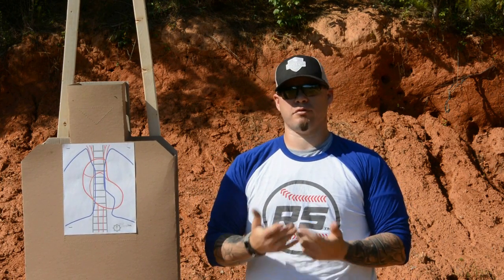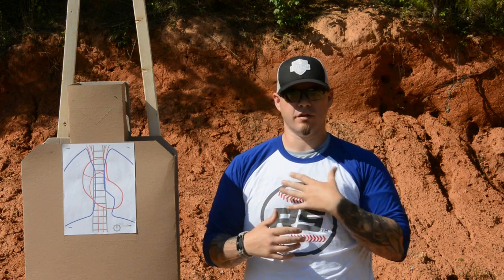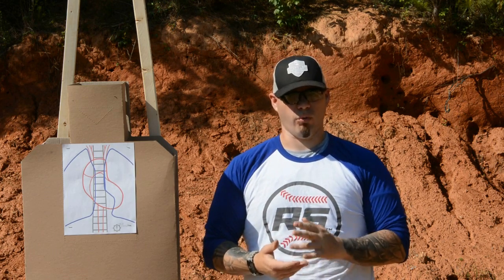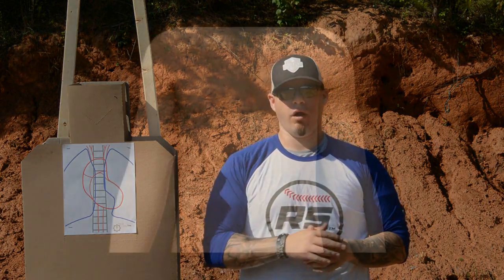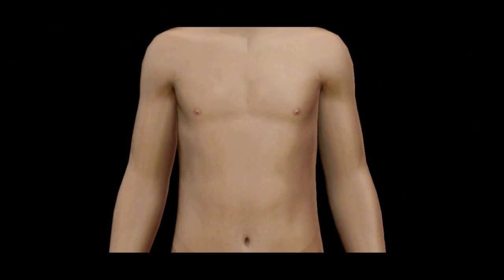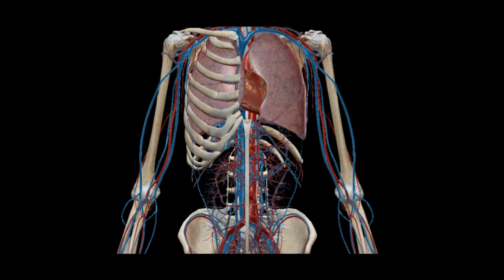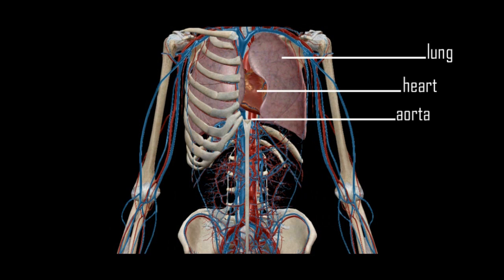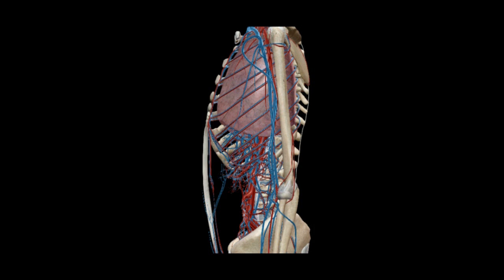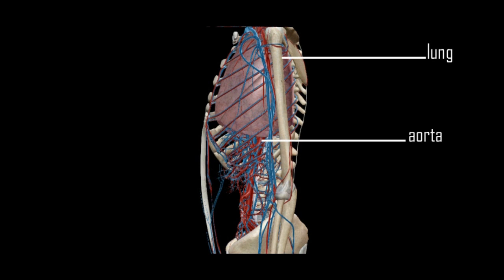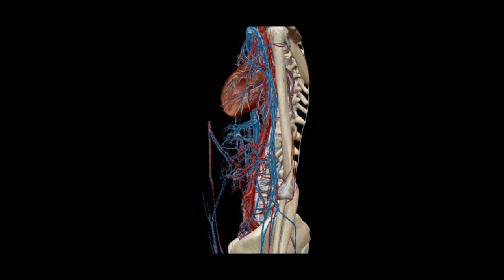We're talking about the thoracic cavity, which is a medical term. In layman's terms, what we're talking about is the region of the body that contains most of your vital organs. What is in the thoracic cavity? First and foremost, most importantly, is going to be the heart. Then we have the superior and inferior vena cava. We also have the aorta, which is a main artery. We've got the pulmonary arteries, pulmonary veins, lungs, liver. All these things are kind of packaged in there behind that rib cage.